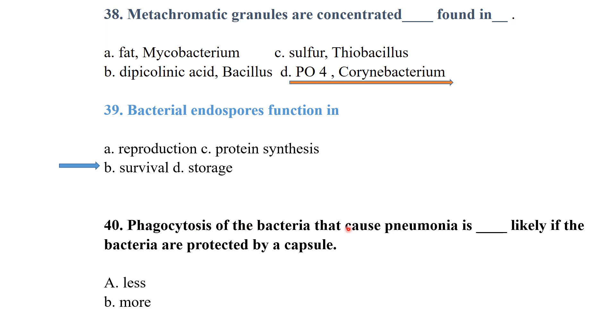Favorite sources of bacteria that cause pneumonia are less likely if the bacteria are protected by a capsule. When bacteria have a capsule, the process of phagocytosis is inhibited and less effective, enabling the bacteria to cause disease. Thank you so much — that is all about part one of the bacteriology MCQs. Keep watching for more MCQs on bacteriology and microbiology.